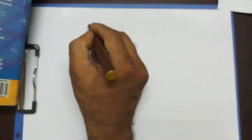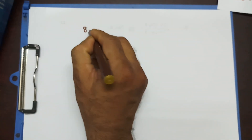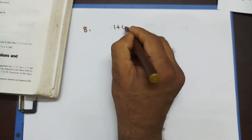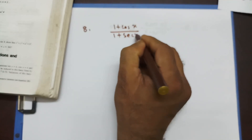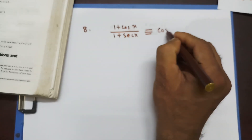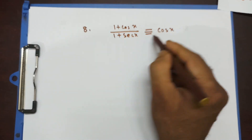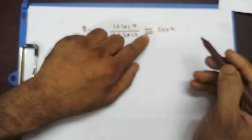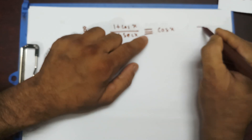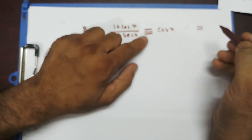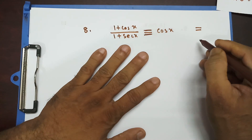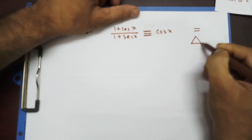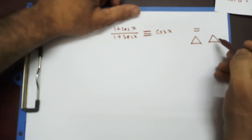First question, question number 8: it says that 1 plus cos x divided by 1 plus sec x is identical to cos x. Now, this sign is almost like an equal sign, but an equal sign has two horizontal bars, and over here we have three horizontal bars. What does this symbol mean? I hope you remember it from congruent and similar triangles.